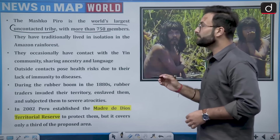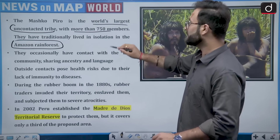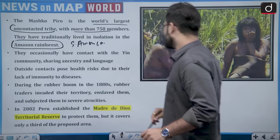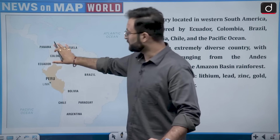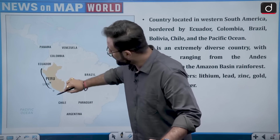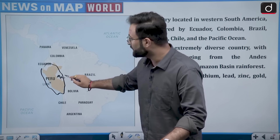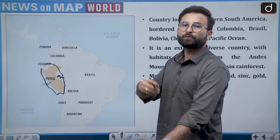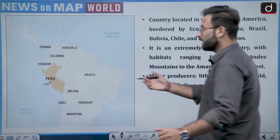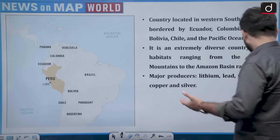When we are talking about the Amazon rainforest, that means we are talking about South America. Looking at the map of South America, these tribes are basically located in the areas of Peru. But recently they have also been found in the areas of Brazil as well, as they are looking for other places. That is why it was in the news. So the answer would be Peru.